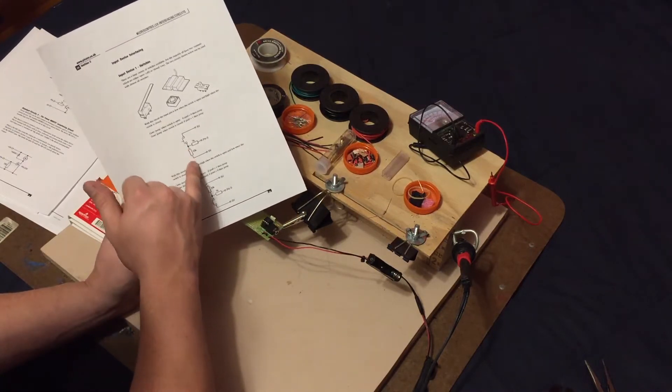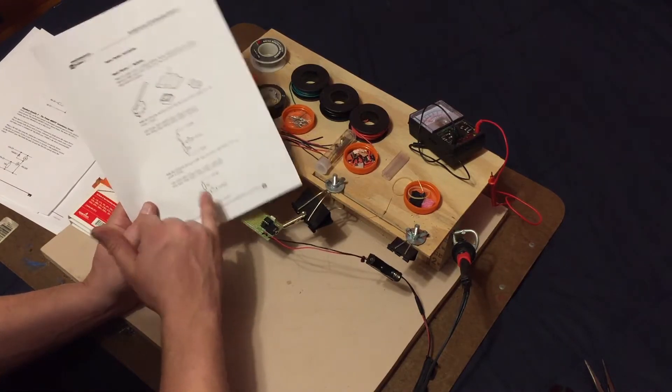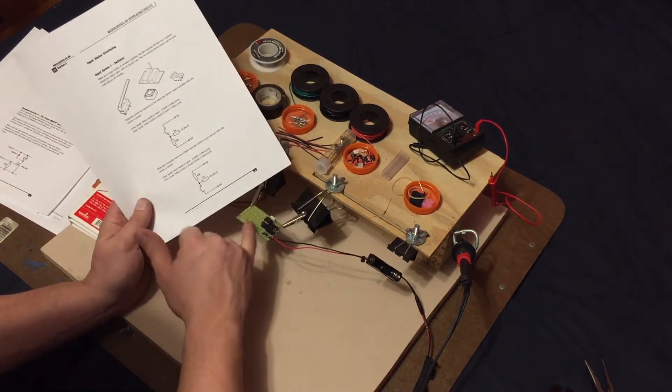So the 10k is gonna go from the pin to the 0 volt or the ground bar, which is gonna be the very bottom here, and then the 1k is gonna go over to our switch.